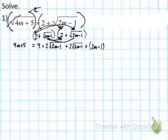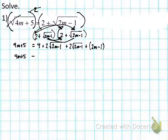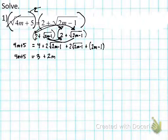Now I'm going to organize this whole right side because it's kind of messy. I have some constants and some terms that could be combined. So: 4m + 5 equals — I'll combine the constants: four plus negative one equals three; bring down the 2m; and the two like-radical terms 2√(2m−1) plus 2√(2m−1) combine to give 4√(2m−1).